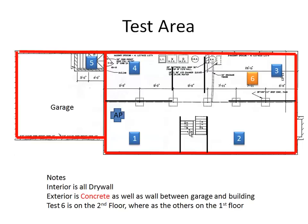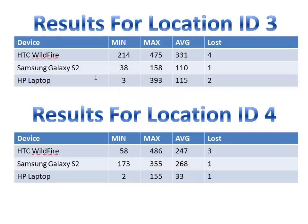Locations three and four — three is the farthest corner, and four is just on the other side of a drywall. At location three, the Wildfire had a fairly high average with four lost packets. The Samsung Galaxy had a far better average with only one lost packet. The laptop had a slightly worse average with two lost packets — so the Galaxy S2 actually did better than the laptop there. At location four, just past the access point, averages jumped into the 200s. The Galaxy was worst in average but the Wildfire had more lost packets, while the laptop settled at a 33ms average with only one lost packet.